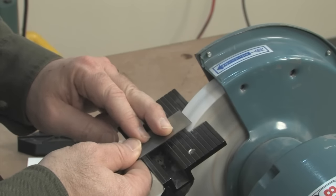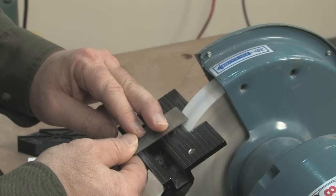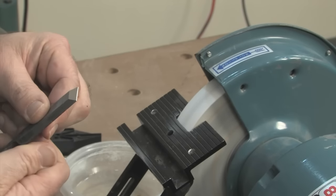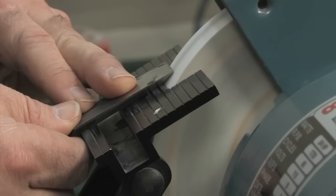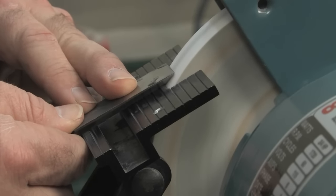You're removing a lot of metal now, so use a light touch and start dunking the tool in water to cool it as the edge starts getting thin and sharp and the blunt edge starts to disappear.